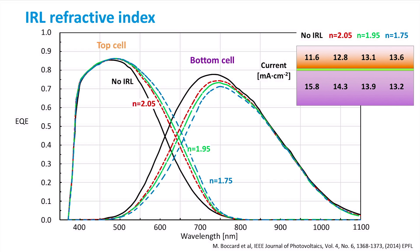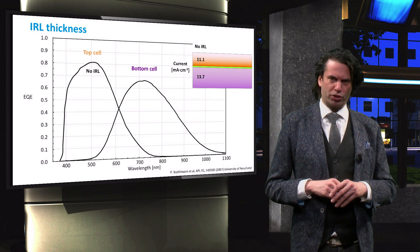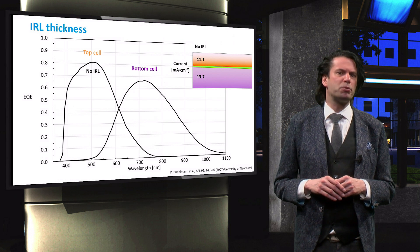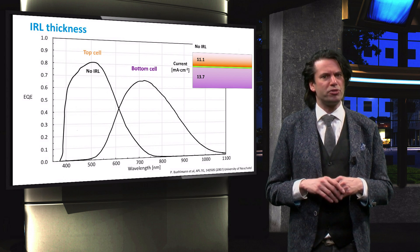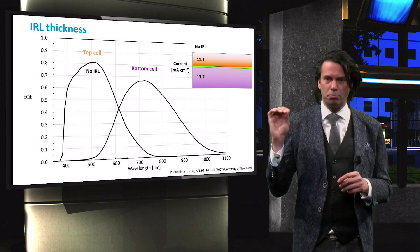Not only the refractive index of the intermediate reflective layer, but also the thickness of the intermediate reflective layer influences the current transfer. This is the EQE of a different micromorph solar cell, which has a top cell current of 11.1 mA per square centimeter and a bottom cell current of 13.7 mA per square centimeter, without intermediate reflective layer.